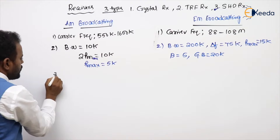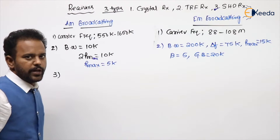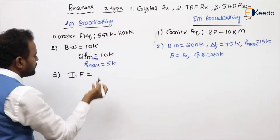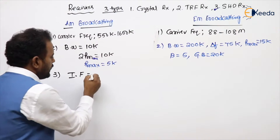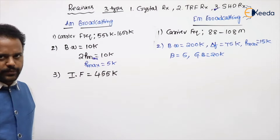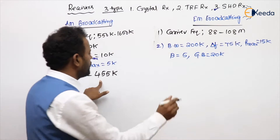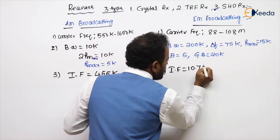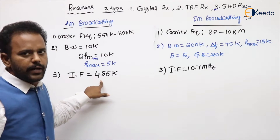Another important point related to the super heterodyne receiver is the intermediate frequency. For AM broadcasting, the intermediate frequency value is 455 kHz. For FM broadcasting, the intermediate frequency value is 10.7 MHz.